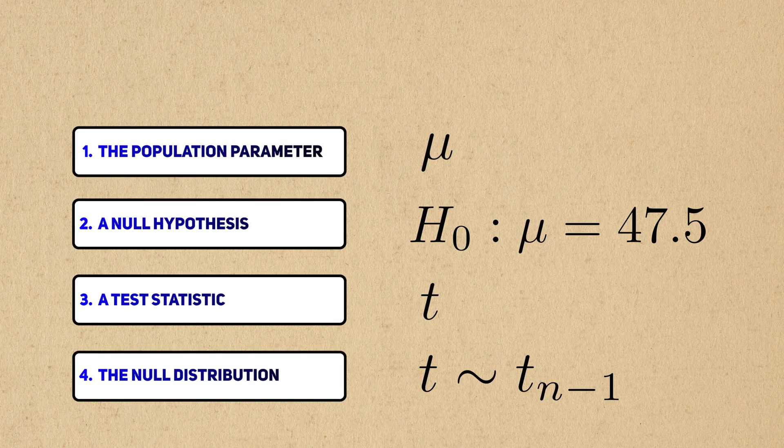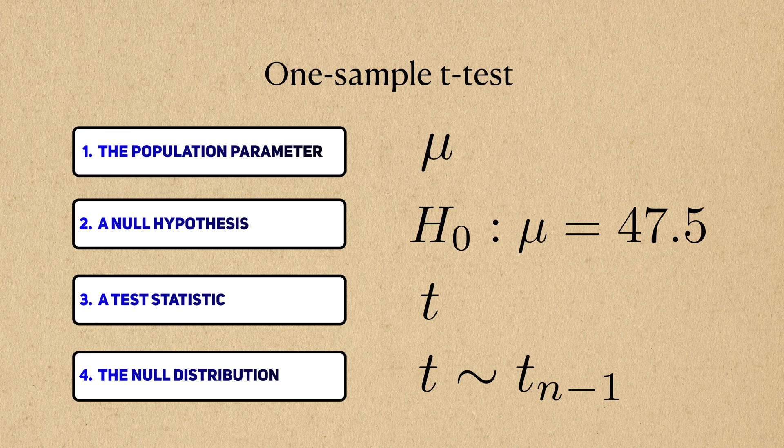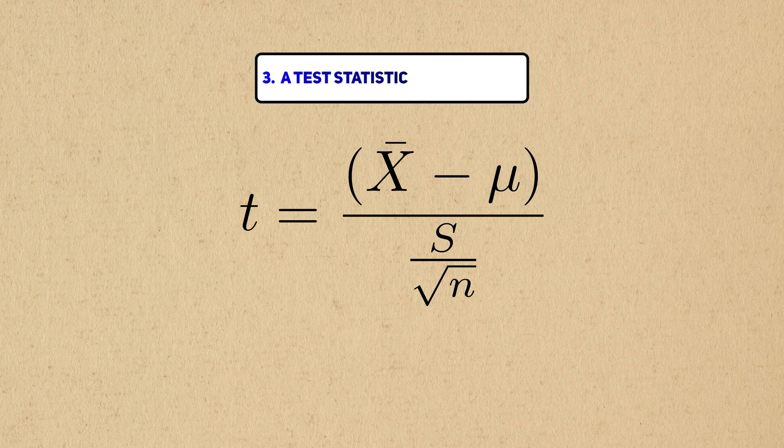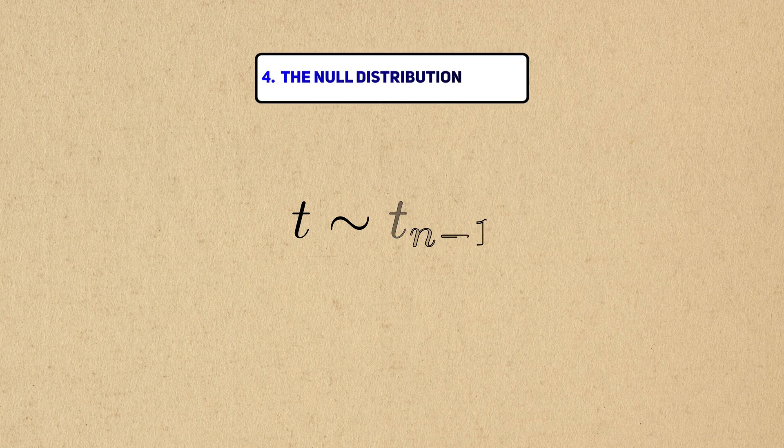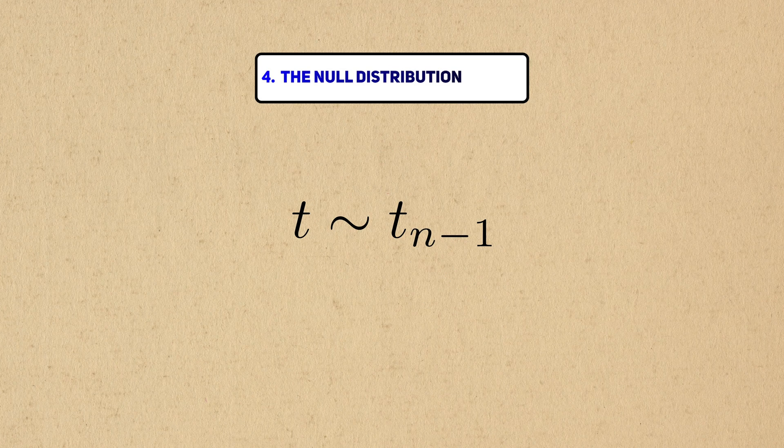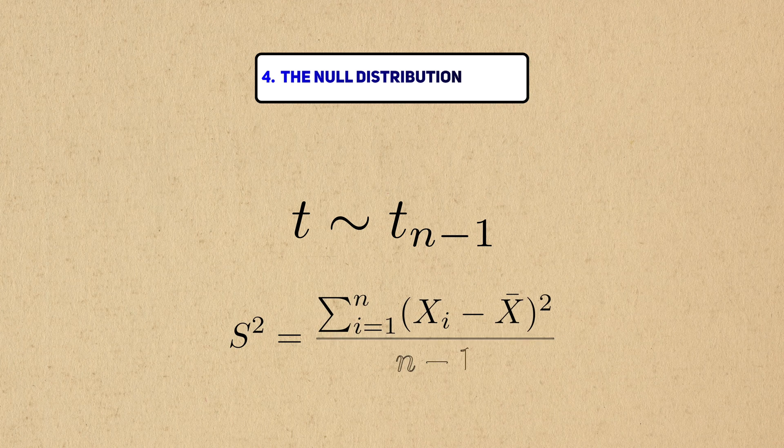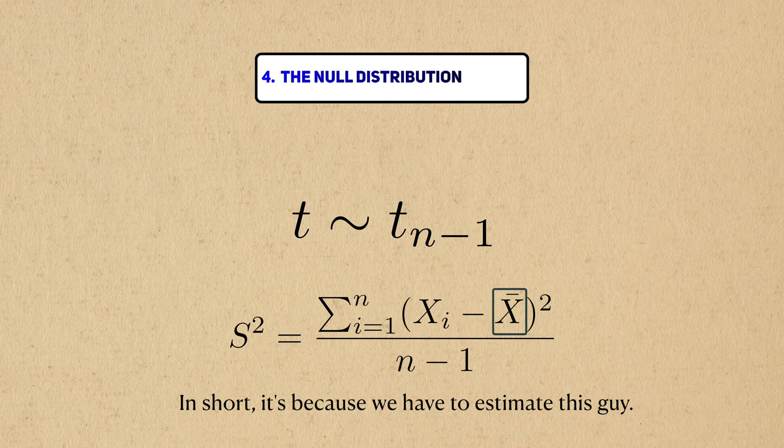So now we have all four ingredients needed to perform the one-sample t test under the NHST framework. Our test statistic is the t statistic. The null distribution is a t distribution with n-1 degrees of freedom. Why is it n-1 and not n? In short, it's because we don't know the population mean and must use the sample mean to estimate the sample variance.